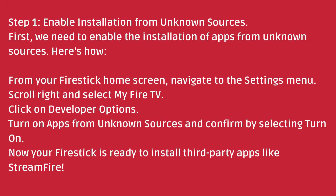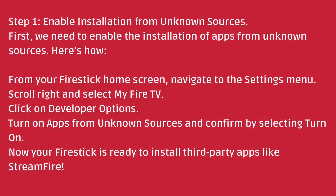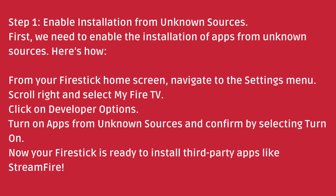Step 1: Enable installation from unknown sources. First, we need to enable the installation of apps from unknown sources. From your Fire Stick home screen, navigate to the settings menu. Scroll right and select My Fire TV. Click on Developer Options. Turn on Apps from Unknown Sources and confirm by selecting Turn On. Now your Fire Stick is ready to install third-party apps, like StreamFire.